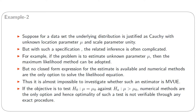In our second example, suppose the underlying distribution for a data set is justified as Cauchy with unknown location parameter mu and scale parameter unity. With such a specification, the related inference is often complicated. If the problem is to estimate unknown parameter mu, the maximum likelihood method can be adopted, but no closed-form expression for the estimate is available — numerical methods are the only option to solve the likelihood equation. Thus, it is almost impossible to investigate whether such an estimator is a minimum variance unbiased estimator. Similarly, if the objective is to test mu = mu_0 against mu > mu_0, numerical methods are the only option and optimality of such a test is not verifiable through any exact procedure.